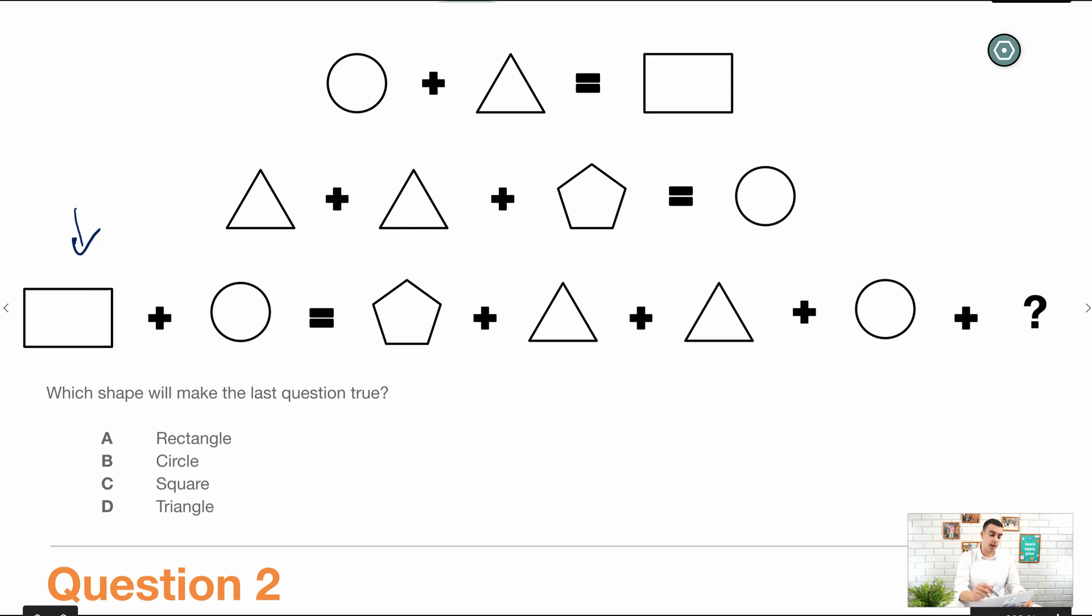Often people will try and solve for each shape individually. So they'll try to solve for a triangle, try to solve for a circle.